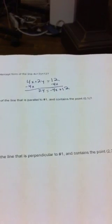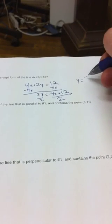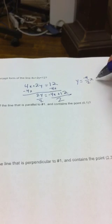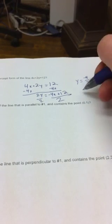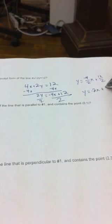Then we're left with 2y equals negative 4x plus 12. From there, I have to divide everything by 2. So 2y divided by 2 gives just y, equals negative 4x divided by 2, which is negative 4 over 2x, plus 12 over 2. Doing some reducing, we get y equals negative 2x plus 6.